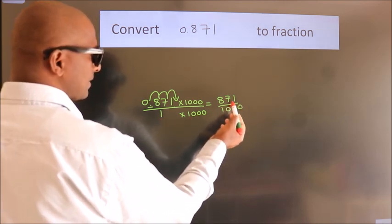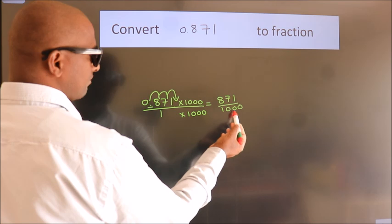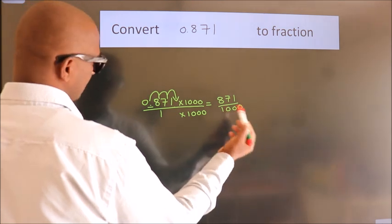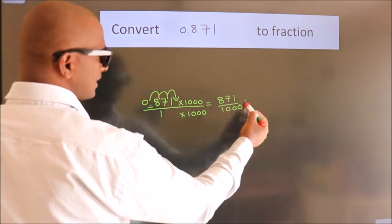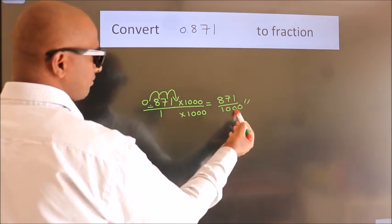This cannot be simplified any further. So, this is our fraction: 871/1000.